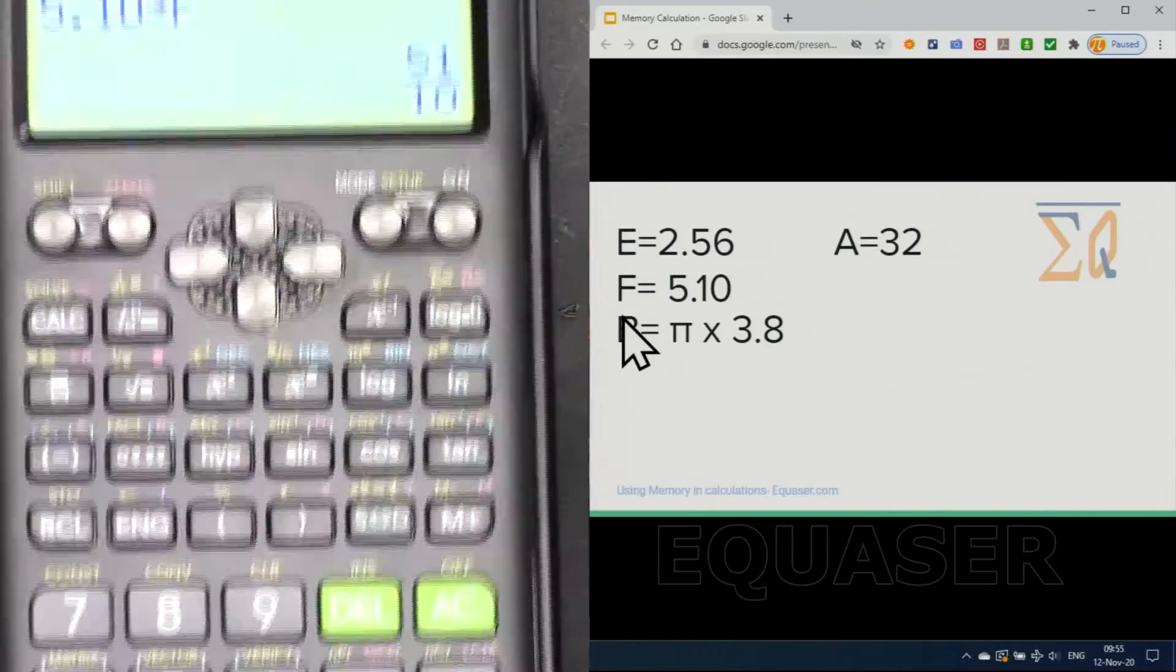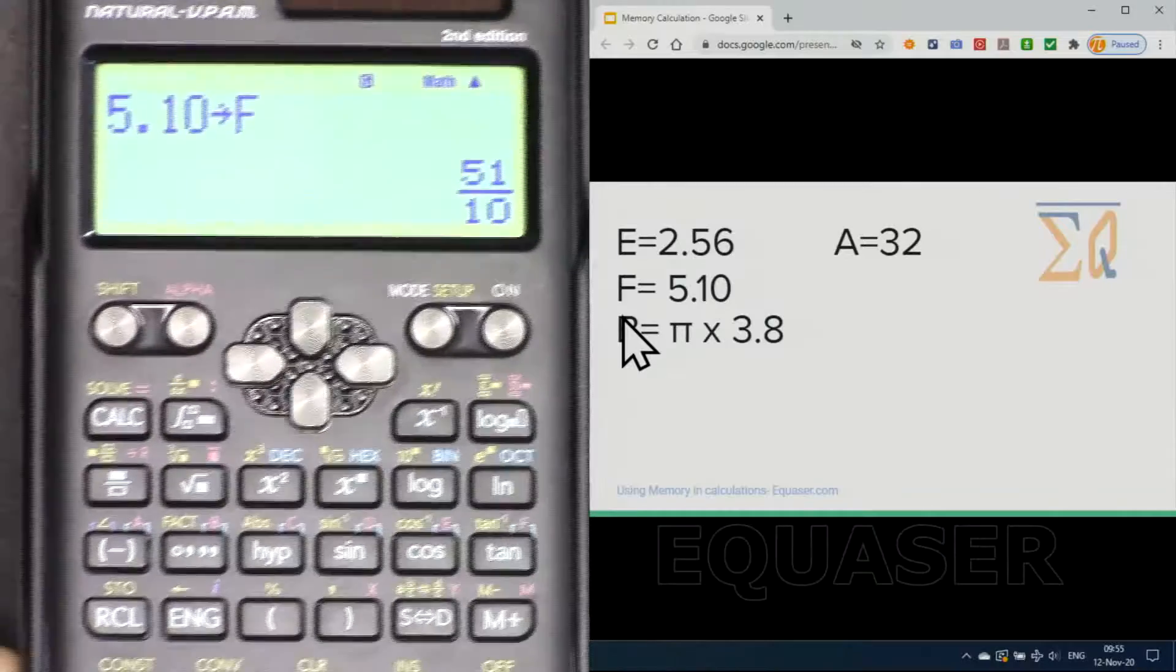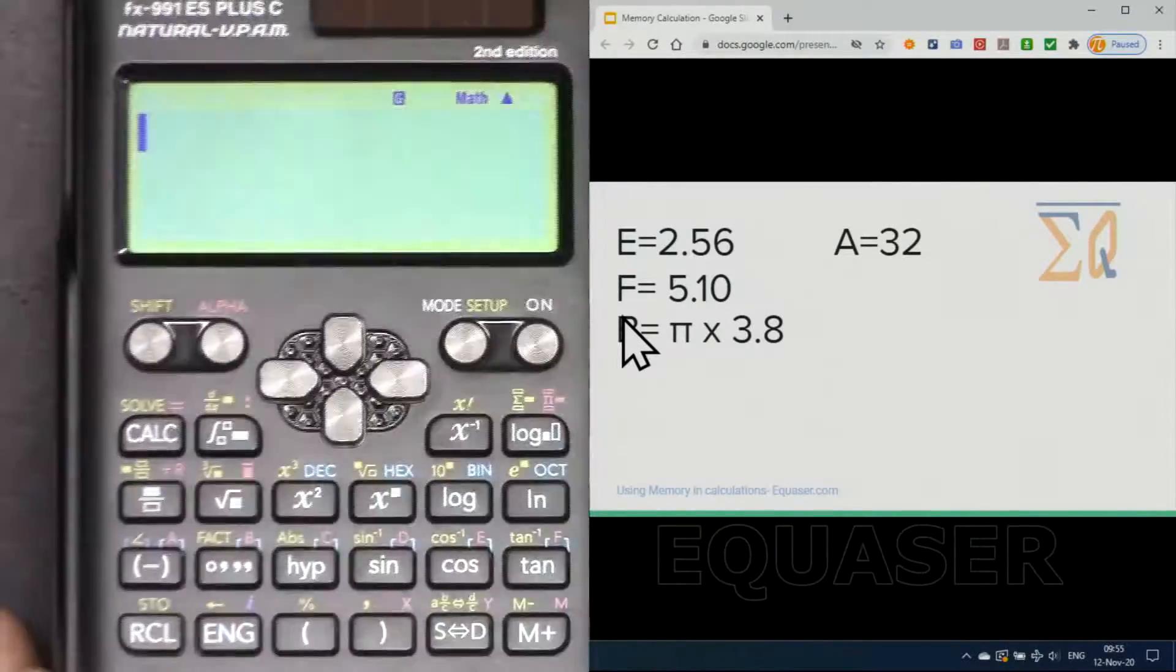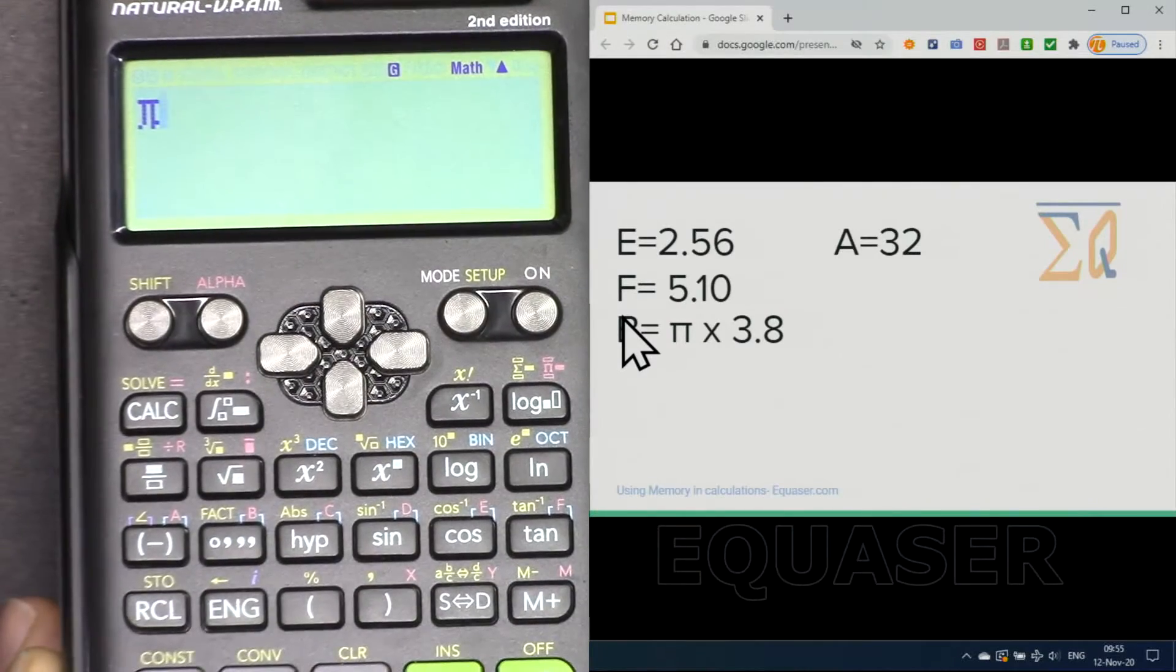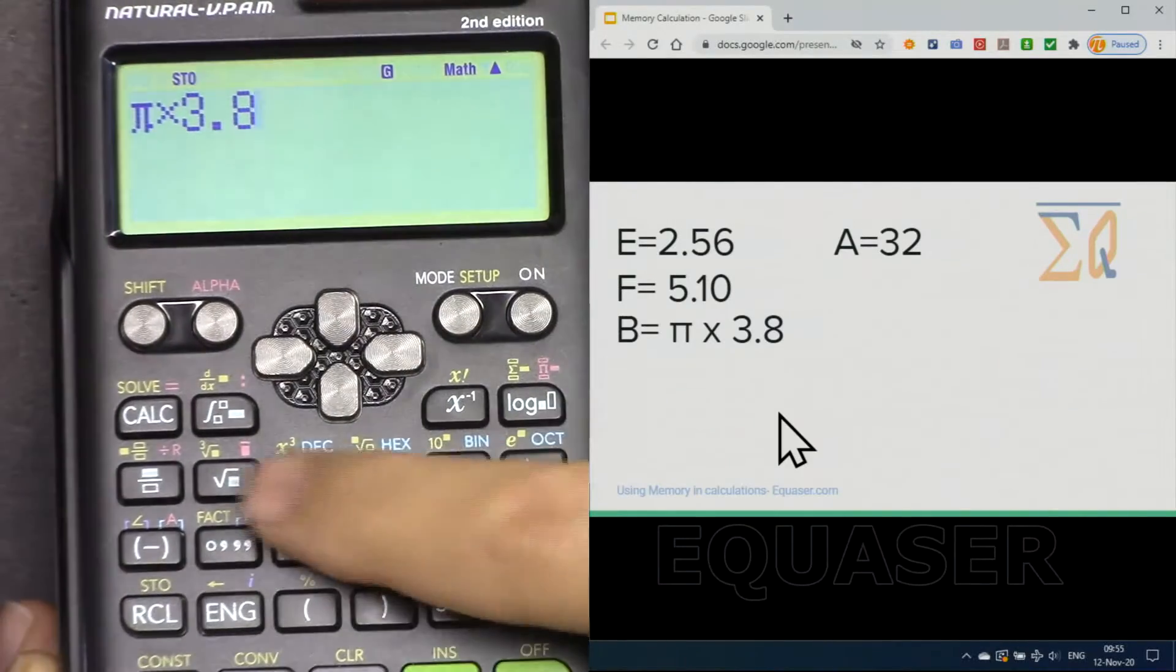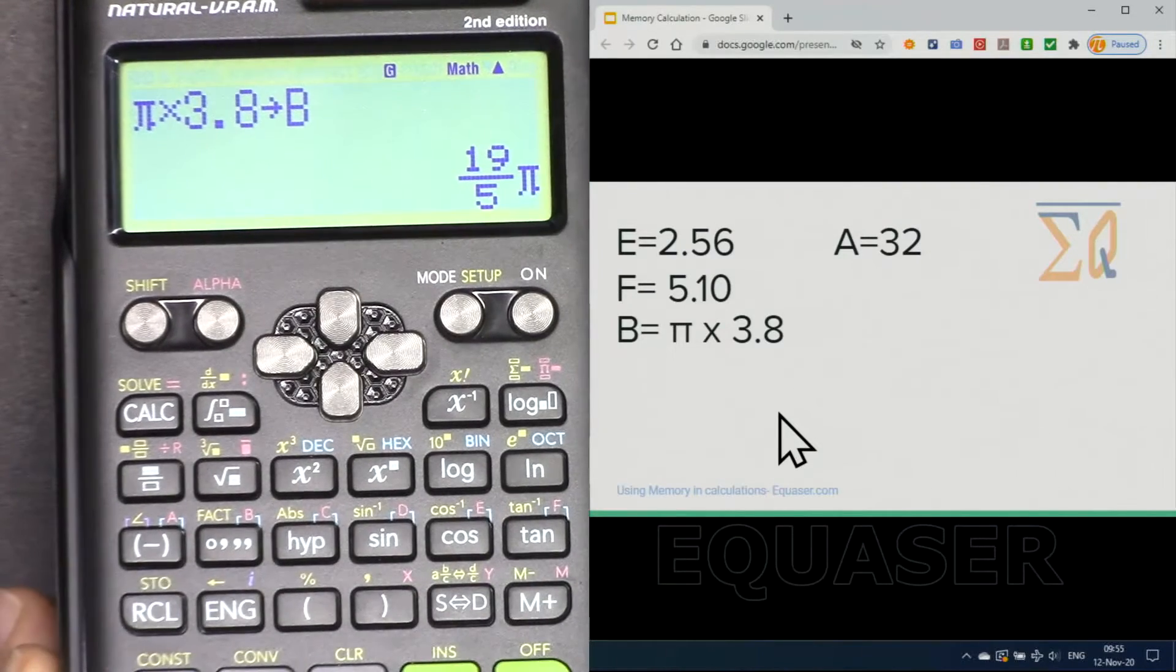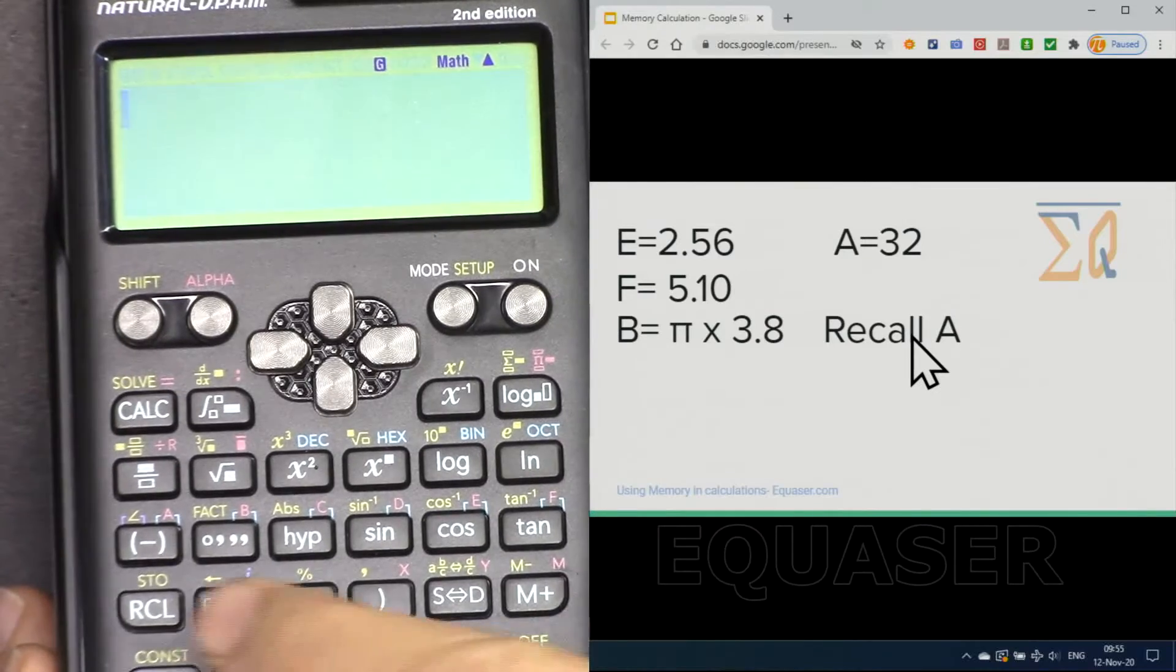And if you want to do pi times 3.8 and store it into B, for pi I'm using this button here with a shift and I'm pressing all clear shift pi times 3.8 and then now store it. And to B it has been stored and converted to proper format and to recall A we press recall A.